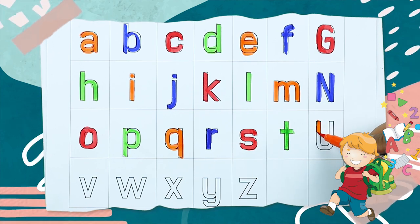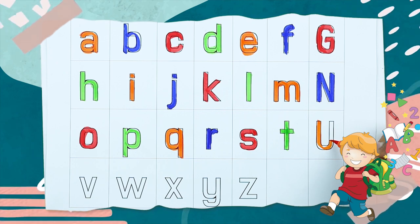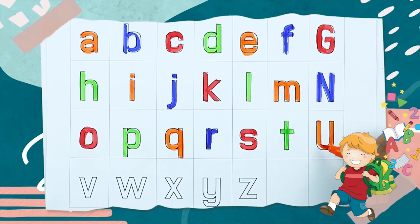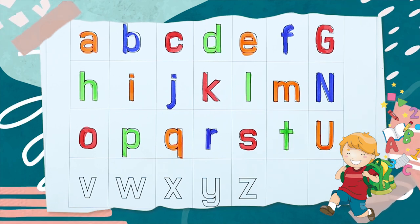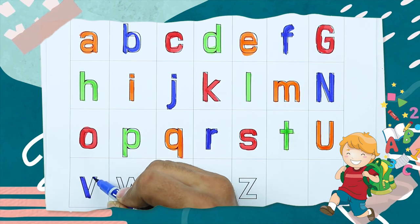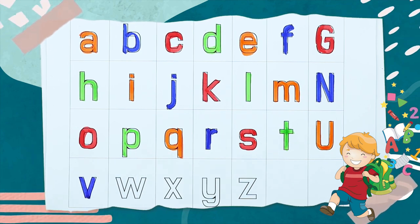U, U for umbrella, yes, U with orange color. V, V for violin, it's V.